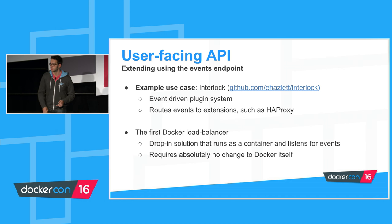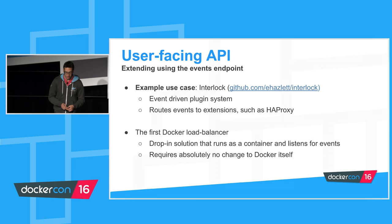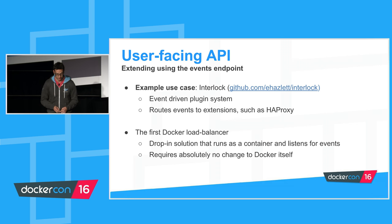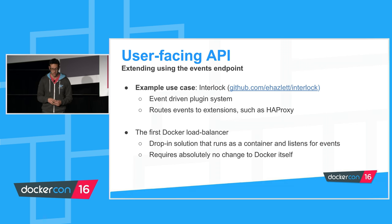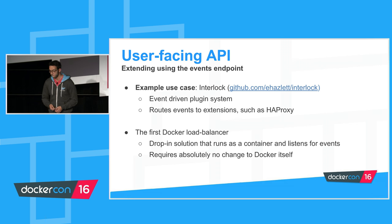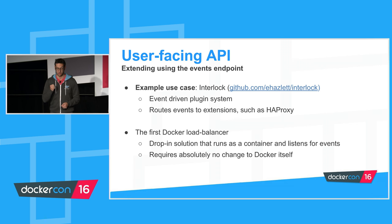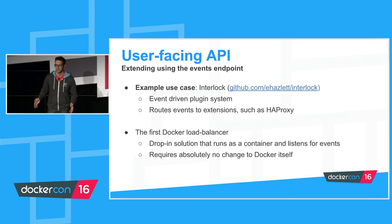A really cool use case for this is Interlock, developed by Evan Hazlett, a Docker employee. It's an event-driven plugin system, created about one or two years ago when there were no plugins in the engine. It routes events to extensions. One typical extension Interlock provides is HAProxy: it subscribes to the events API, and when there's a container creation, it routes to the HAProxy extension to update the configuration. When a container goes down, it updates the configuration to remove it. Evan built the very first Docker load balancer without changing a single line of engine code — purely extending by relying on the API.